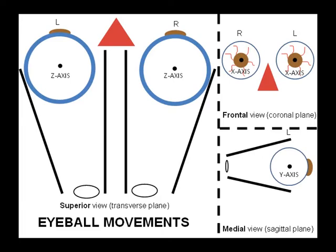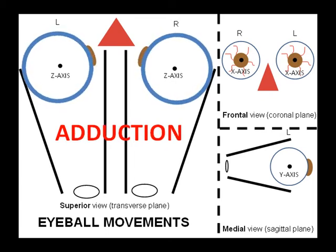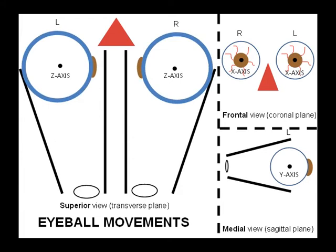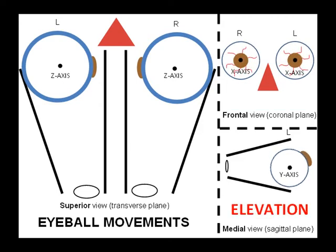We have a superior view of the eyeballs within the transverse plane, where we can see the z-axis. We have a frontal view of the eyeballs in the coronal plane, where we can see the x-axis. And we have a medial view of the left eyeball in the sagittal plane, where we can see the y-axis. Rotation around the z-axis is known as abduction and adduction, rotation around the x-axis is known as intorsion and extorsion, and rotation around the y-axis is known as elevation and depression.